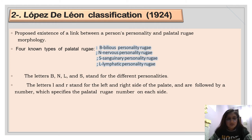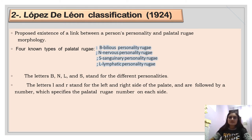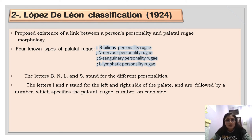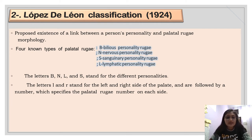The second classification was given by Lopez de Leon in 1924. He proposed the existence of a link between a person's personality and their palatal rugae. Four known types were described: B for bilious personality rugae, N for nervous personality rugae, S for sanguinary personality rugae, and L for lymphatic personality rugae. The letters L and R stand for the left and right sides of the palate, followed by a number specifying the palatal rugae number on each side.